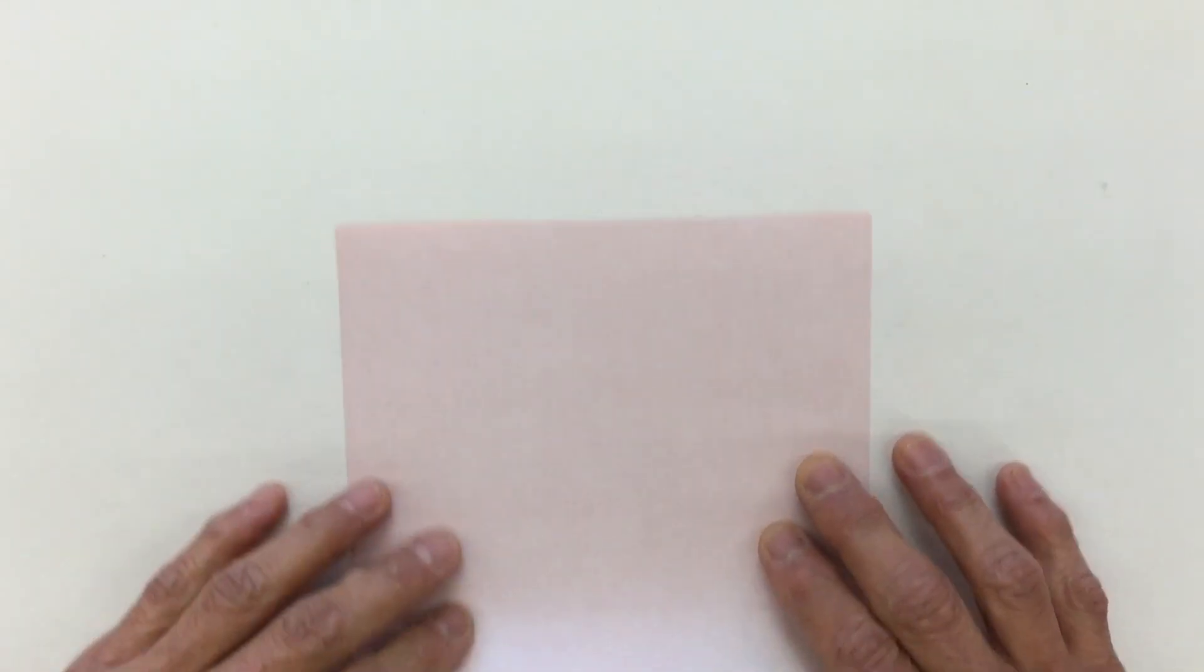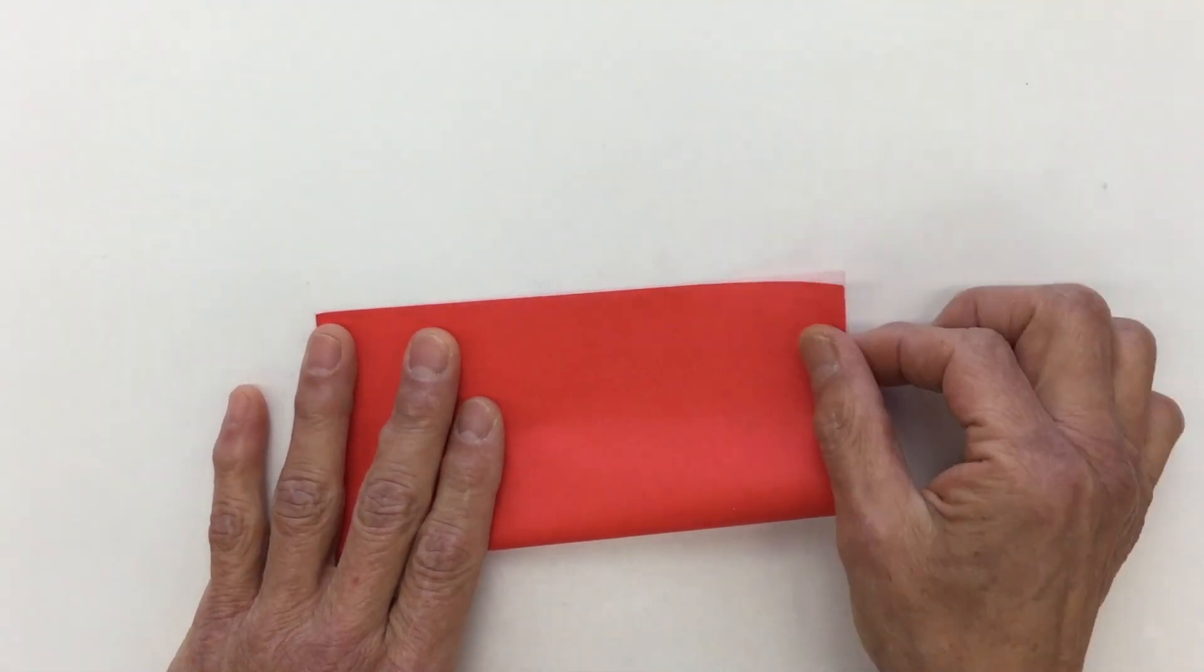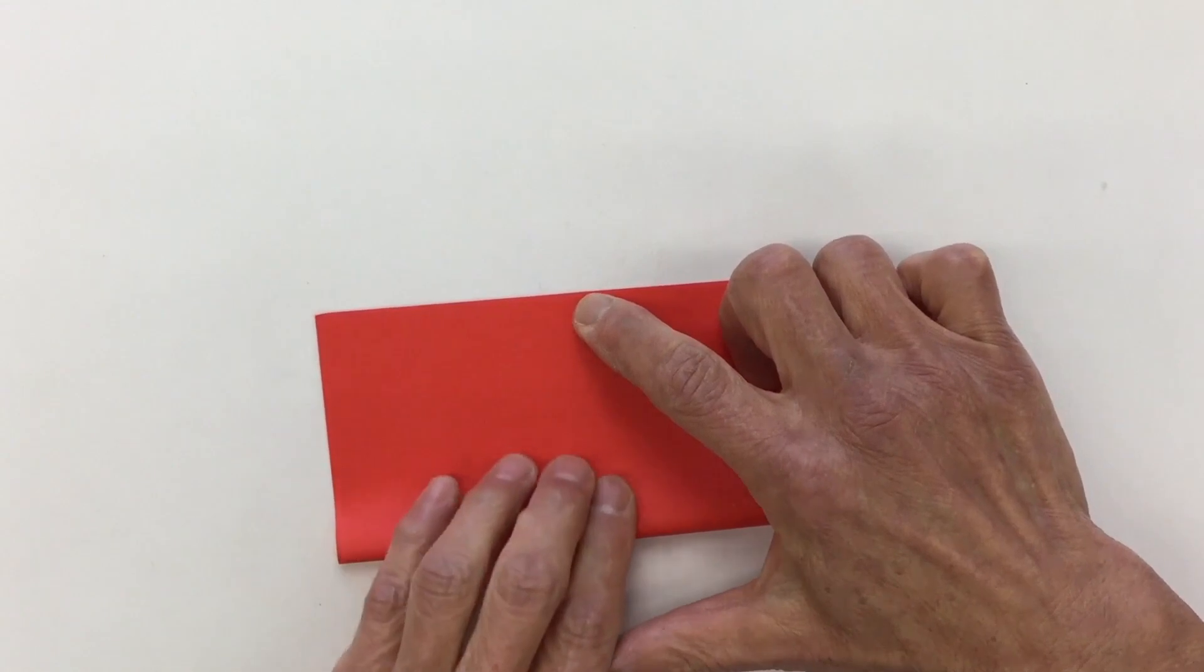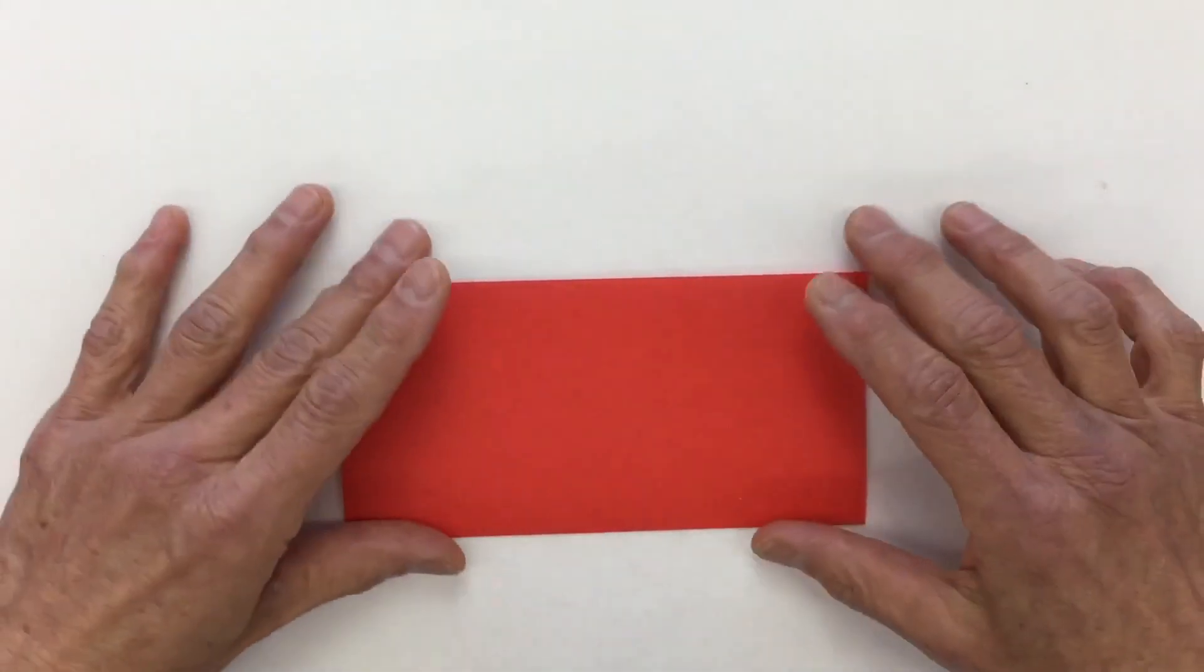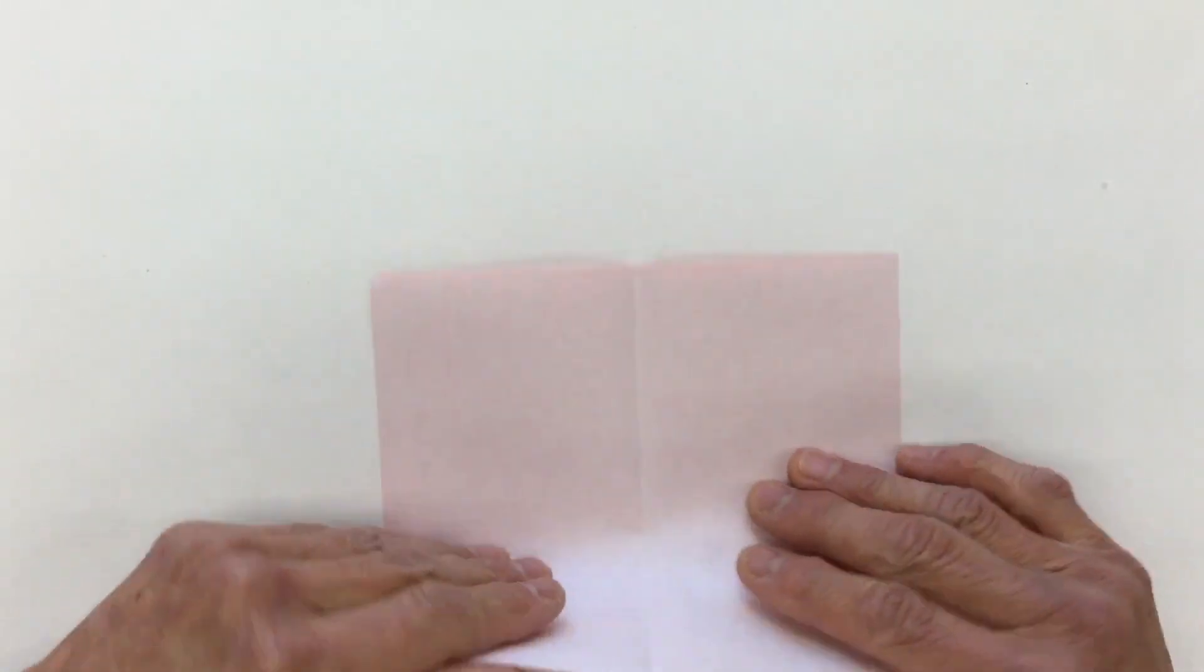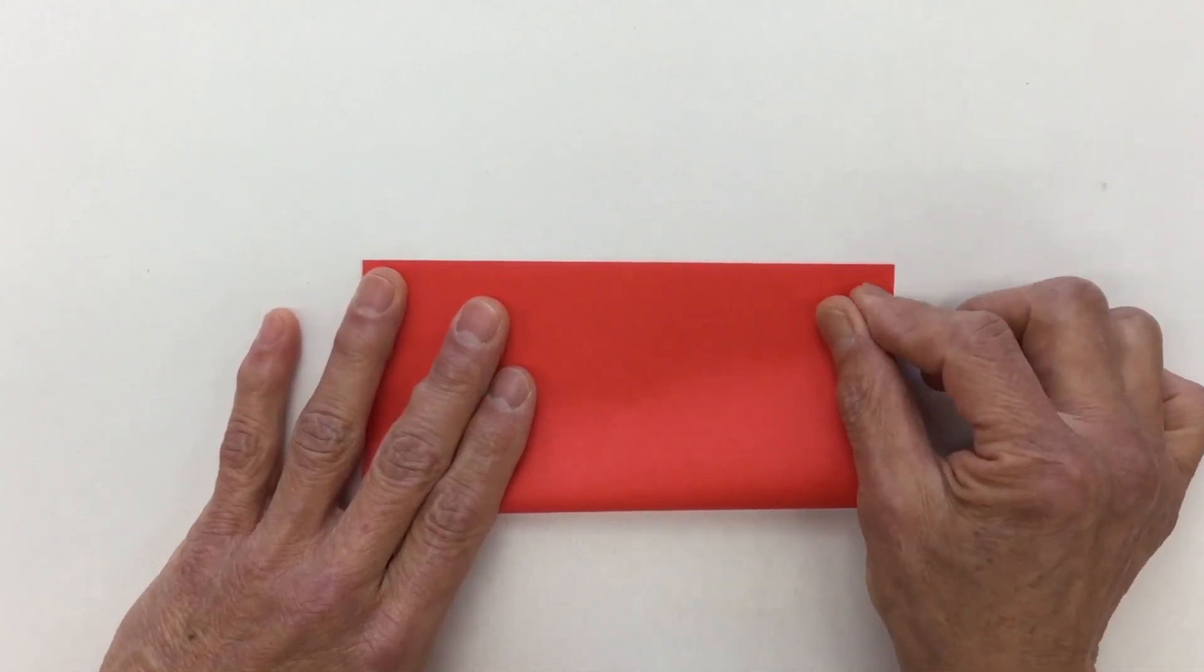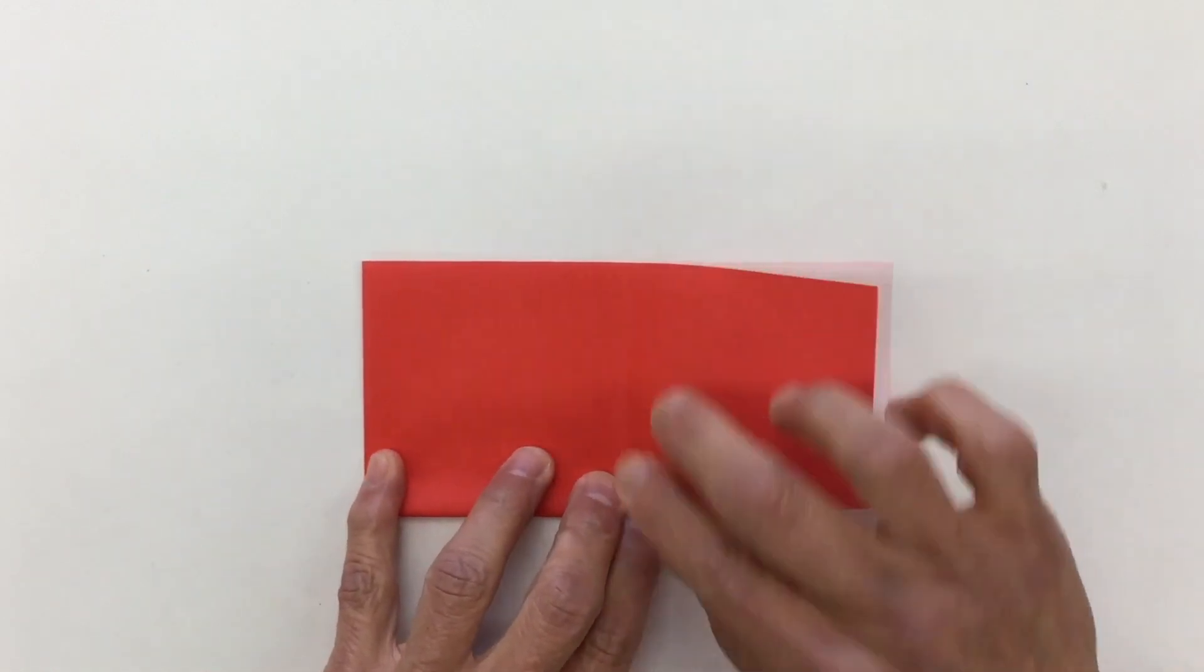The outside papers always begin with the white side up. First fold exactly in half. The way you achieve that is by lining up your two corners, holding the paper, and then giving a good strong crease. Open up the paper, shift, and fold in half again the same way.